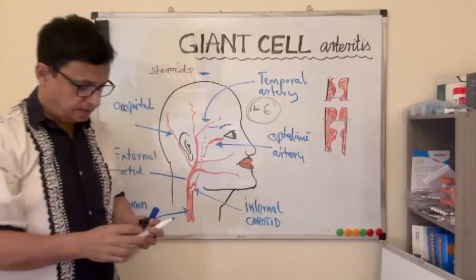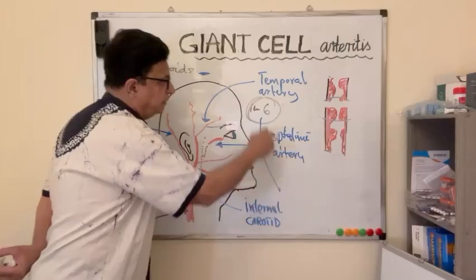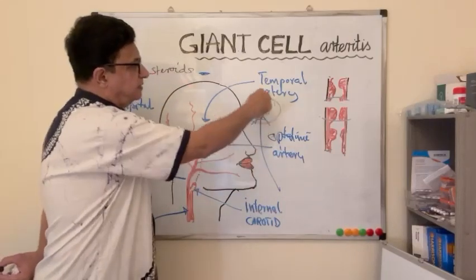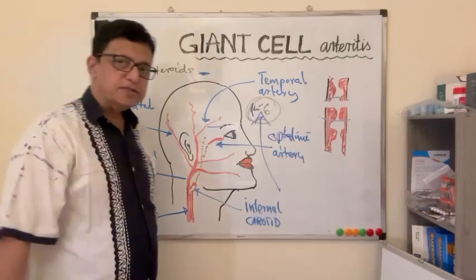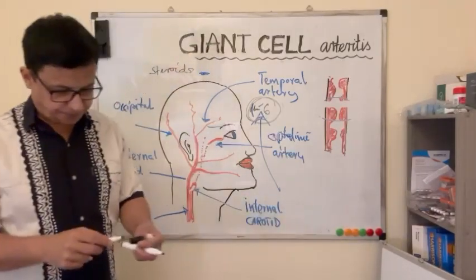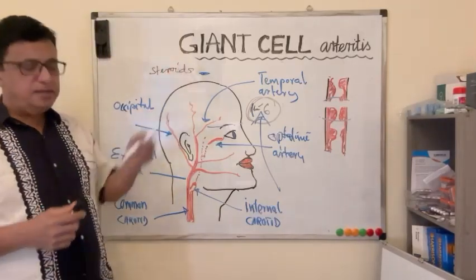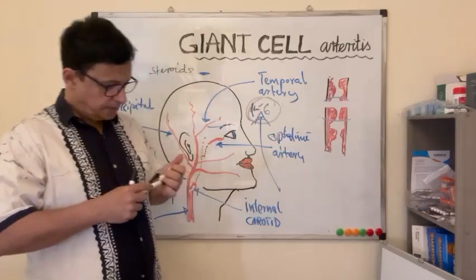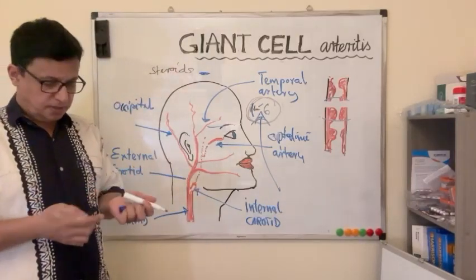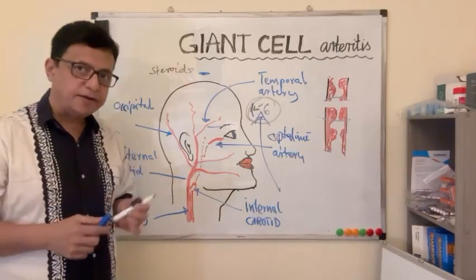As I mentioned previously, Interleukin-6 plays a major role in the inflammatory reaction, and therefore we can treat with Interleukin-6 suppressors like Tocilizumab. So the main major treatment option is steroid, but alternative treatment option is Tocilizumab, Interleukin-6 antagonist.